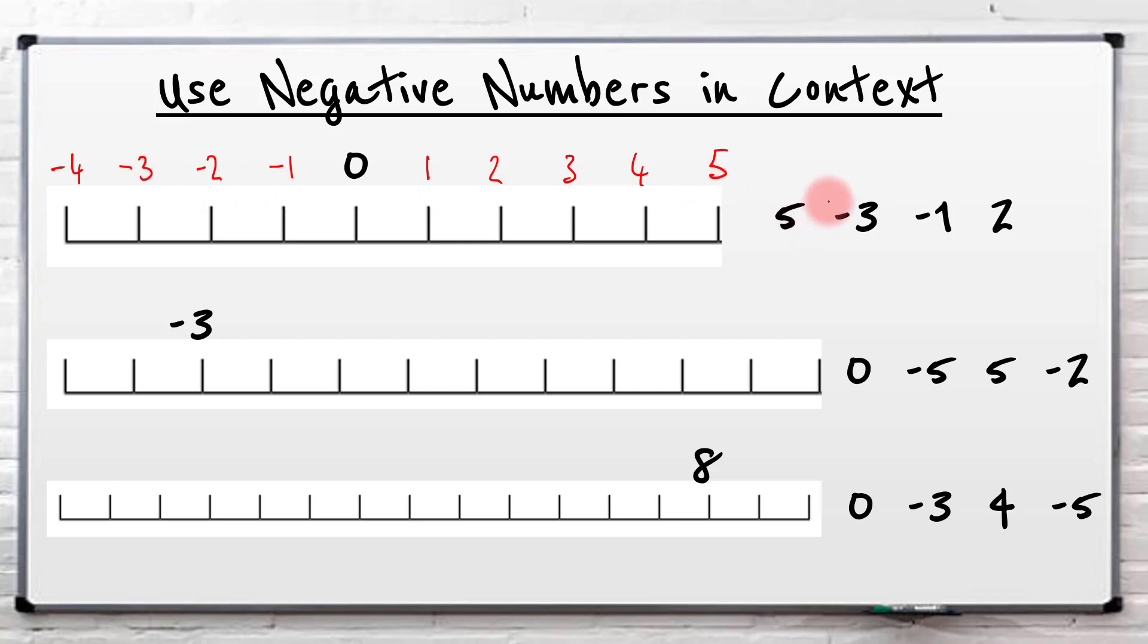So the number five is here. We've already put it on. Minus three, well, very straightforward. It's here. Minus one, we've got it there. And then finally, two is here. So just put them all on. And then you can identify the ones that you needed to put on the line.